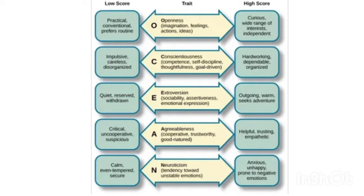There are five traits: Openness — including imagination, feelings, actions, and ideas. Conscientiousness — including competence, self-discipline, thoughtfulness, and goal-driven behavior. Extroversion — including sociability, assertiveness, and emotional expression. Agreeableness — including being cooperative, trustworthy, and good-natured. And Neuroticism — which is a tendency towards unstable emotions.